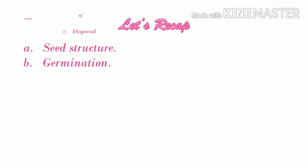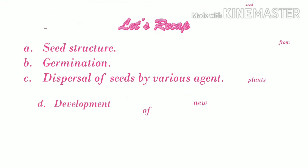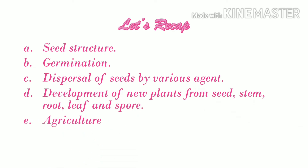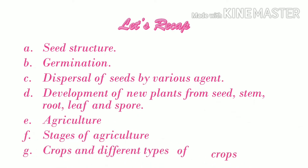Let's recap today whatever we have studied in this class: A. seed structure, B. germination, C. dispersal of seeds by various agents, D. development of new plants from seed, stem, root, leaf, and spore, E. agriculture, F. stages of agriculture, and G. crops and different types of crops.